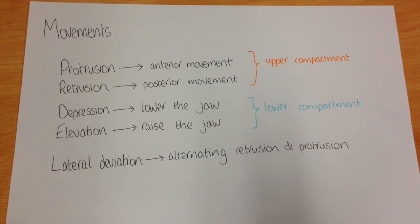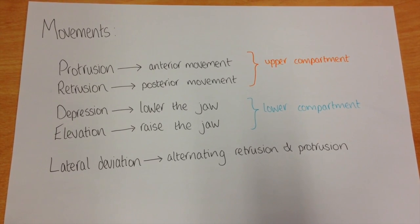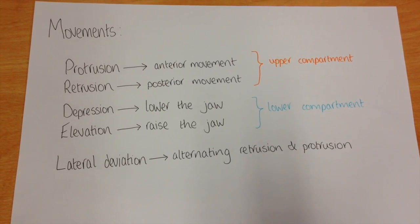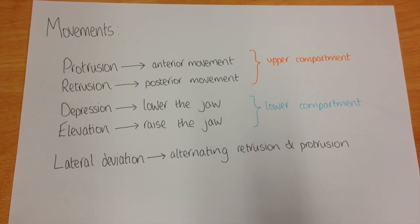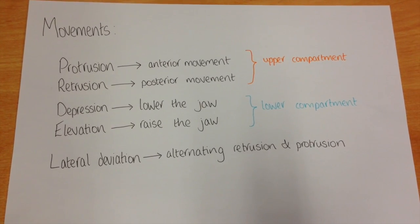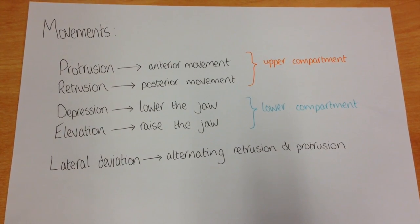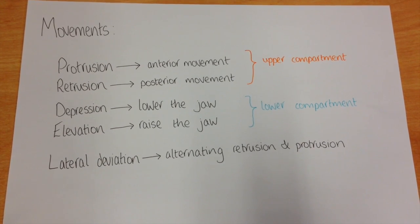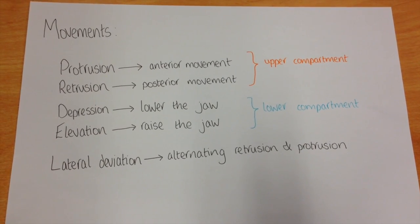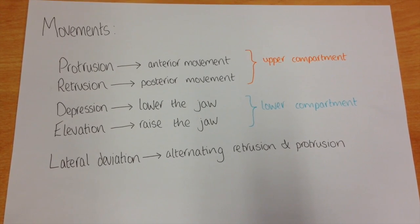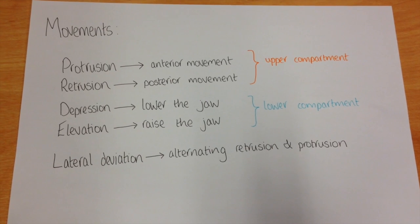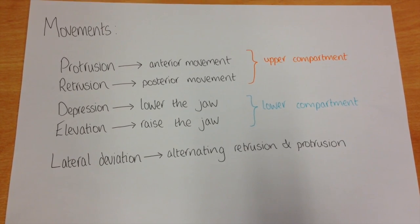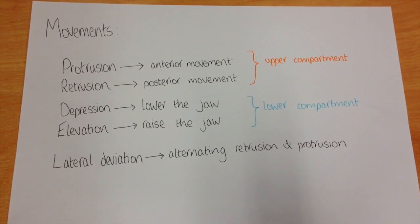Depression and elevation involve lowering and raising the jaw, which occurs in the lower compartment of the joint between the intra-articular disc and the head of the mandible. Lateral deviation involves alternating protrusion and retrusion of the right and left temporomandibular joints.